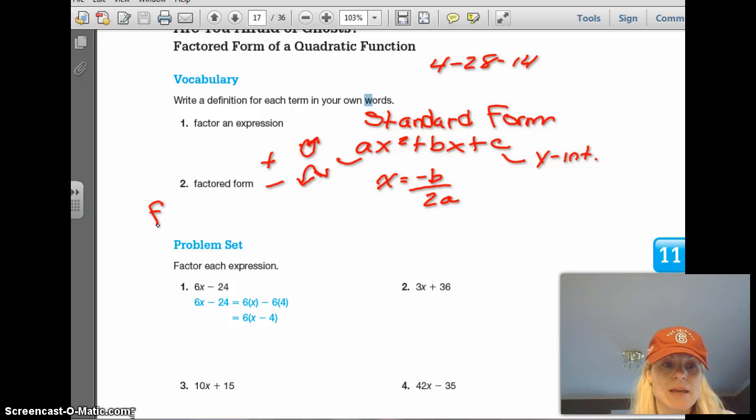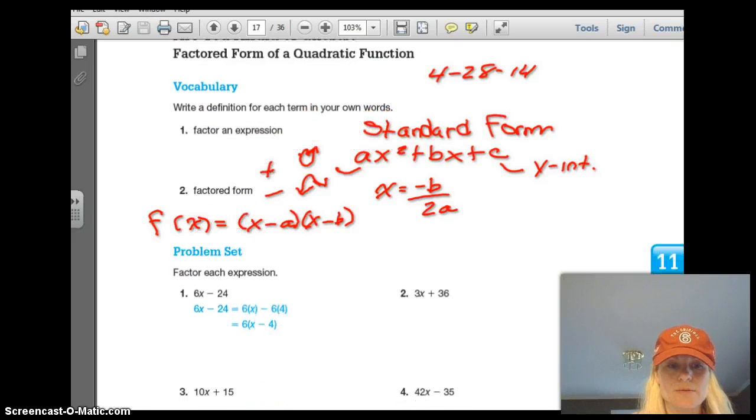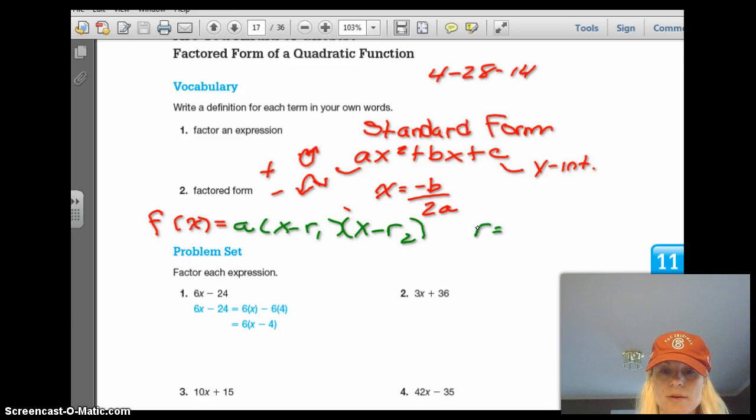We talked about factored form today. And that would be f of x equals x, and it could be plus or minus a, and then x plus or minus b. Or another way of writing the factored form is f of x, and then we have a, and then we have x minus r1 and x minus r2. And r stands for roots.